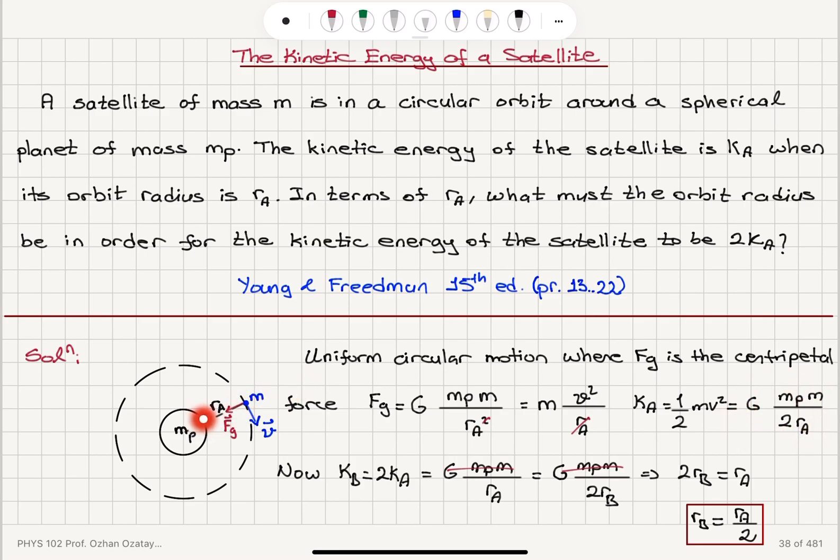At radial position r sub b, this would be G mp m over 2 r sub b, and this must be equal to the new kinetic energy at position r b, must be equal to twice that of the kinetic energy at r a, which tells me that r b is r a over 2. So the satellite has to approach the planet for its kinetic energy to increase, so it will move faster.